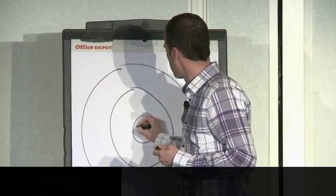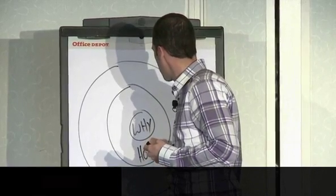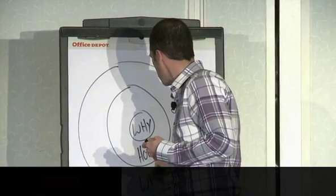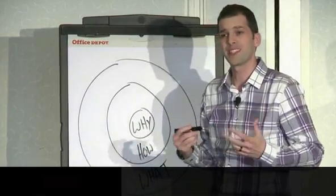This simple model called the Golden Circle was developed by Simon Sinek a few years ago. And it helps to explain what it is that sets these organizations apart, what makes them different.